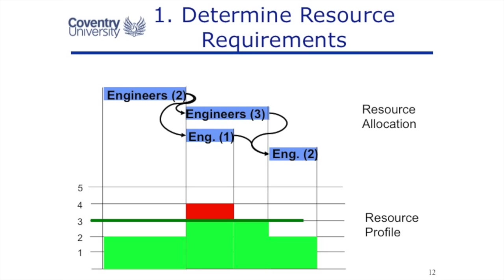We could then show a histogram or a profile of the resources we need over time. This might look something like this: at the top of this slide we've got a Gantt chart showing the tasks, the dependencies between them, and the length of time those tasks take. We're allocating resources to these tasks — the first task needs two engineers, and the second and third tasks, which could be done together, need three engineers and one engineer respectively. We create a resource profile or histogram showing how many resources we need over time. You can see at the bottom of this slide that we need up to four engineers to complete this project when we do tasks two and three together.